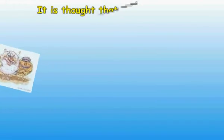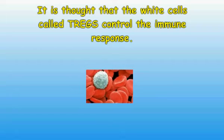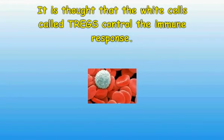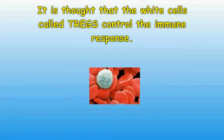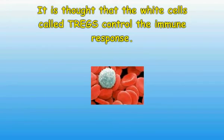It is thought that white cells called Tregs control the immune response. Further studies of Tregs in schizophrenia are awaited. It is likely that Treg cells will become very important in schizophrenia in the future, as schizophrenia is probably a Treg syndrome — defined as an abnormal Treg-controlled immunogenic response to an immunogen or autoimmunogen in a genetically predisposed individual, resulting in inflammation or cancer.